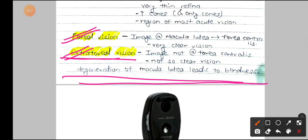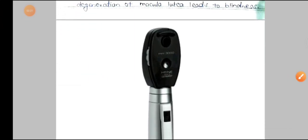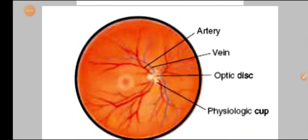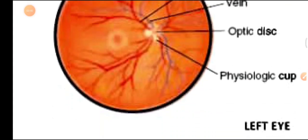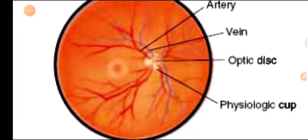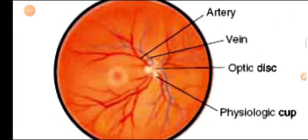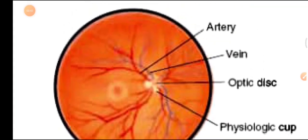Degeneration of the macula lutea leads to blindness. Here is the ophthalmoscope through which the fundus oculi is examined. And here is the diagram of the fundus oculi where you can see the veins of the eye.